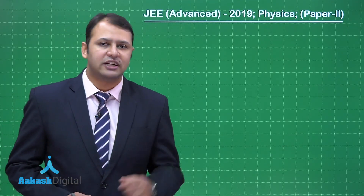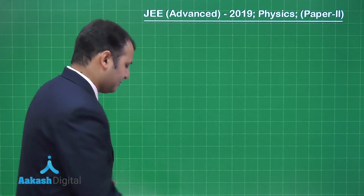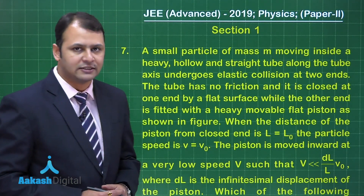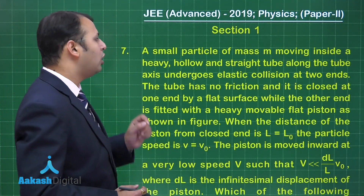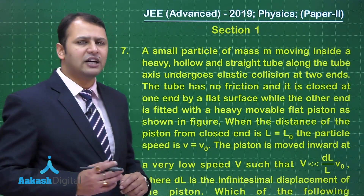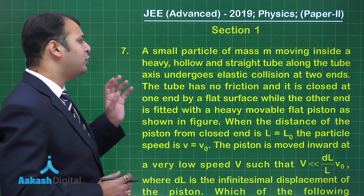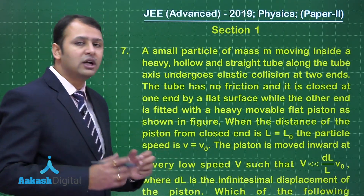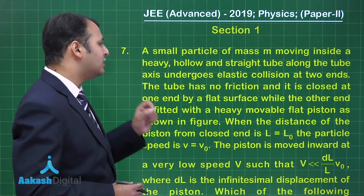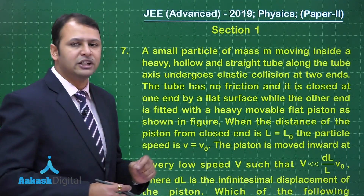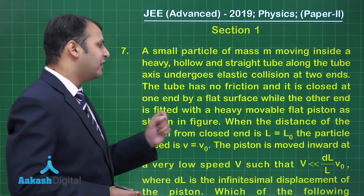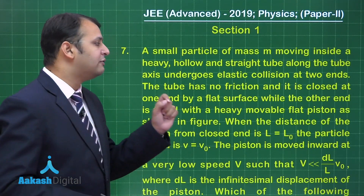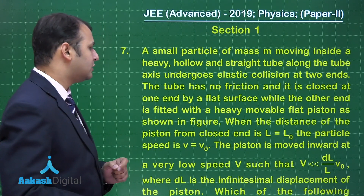Let's take question number 7, which belongs to chapter Kinetic Theory of Gases. As per the question, a small particle of mass M moving inside a heavy hollow straight tube along the tube axis undergoes elastic collision. The tube has no friction and it is closed at one end by a flat surface, while the other end is fitted with a heavy movable flat piston as shown in the figure.